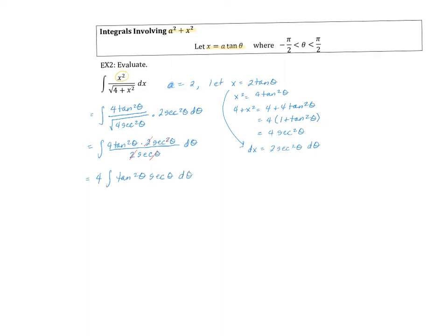Going back to the previous section, I can replace my tangent squared with secant squared minus one. This becomes the integral of secant squared theta minus one times secant of theta d theta. And if I distribute that secant, I get secant cubed of theta minus secant of theta d theta.